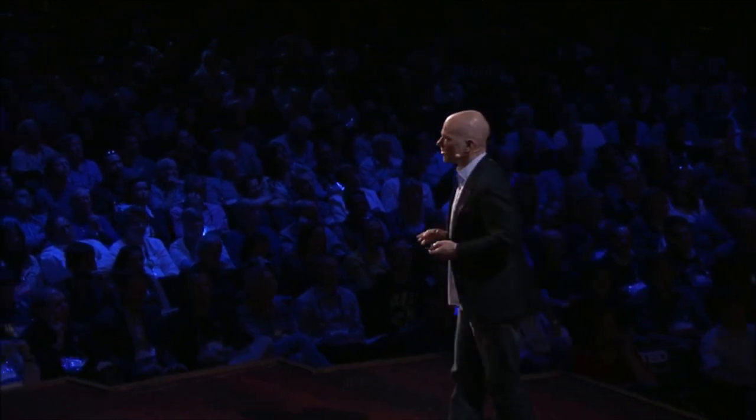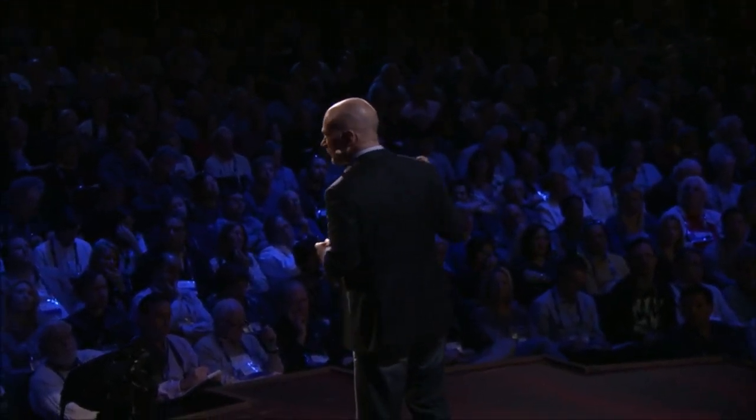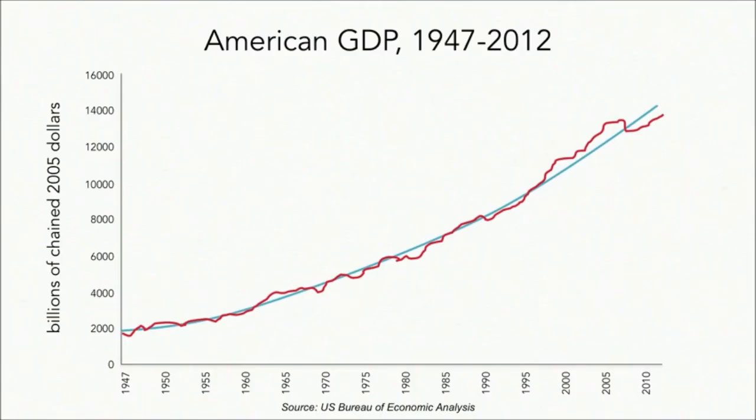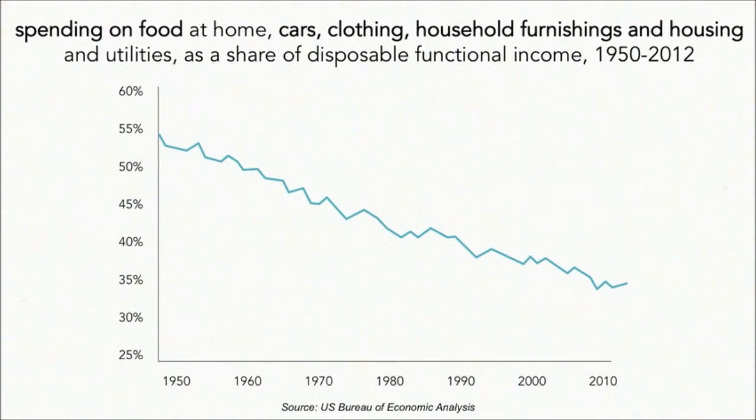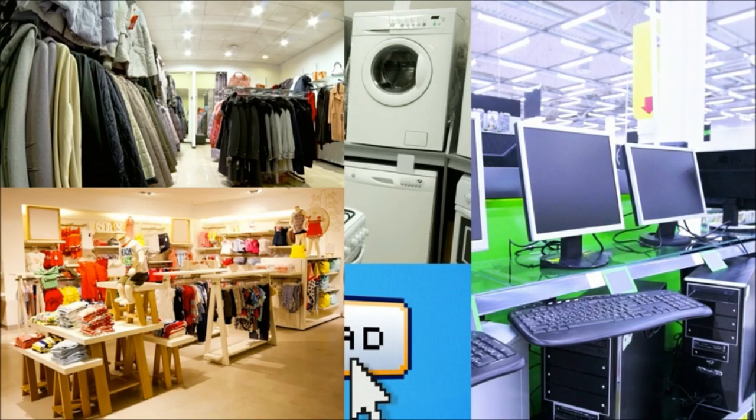It's a world that Eric Brynjolfsson and I are calling the new machine age. The thing to keep in mind is that this is absolutely great news — the best economic news on the planet these days. Technological progress is what allows us to continue this amazing recent run where output goes up over time, while at the same time prices go down and volume and quality just continue to explode. This is abundance, which is exactly what we want our economic system to provide.